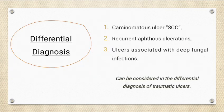For differential diagnosis, because of the clinical presentation the ulcer can be mistakenly diagnosed as squamous cell carcinoma, so you must take appropriate and thorough history from the patient. It can also be mistaken for the major type of recurrent aphthous ulceration, and ulcers associated with fungal infections based on location and appearance.